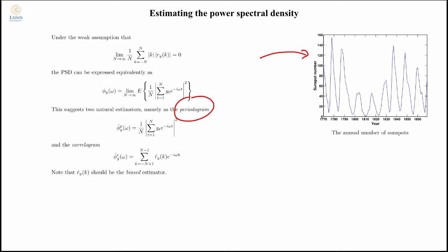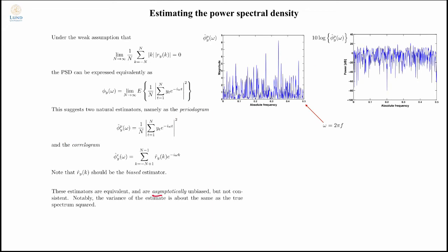Another way of estimating the power spectral density is the correlogram. You go back to the definition, but you can't estimate the covariance functions for all the lags up to infinity, so you truncate at the highest possible lag, which is n minus 1, and form the power spectral density estimate like that. Both of these estimators are actually equivalent. They are asymptotically unbiased, but they are not consistent.